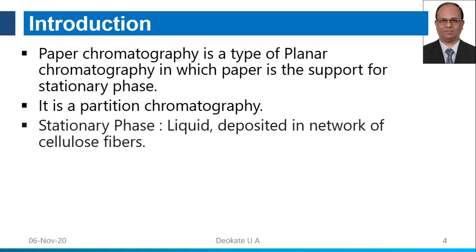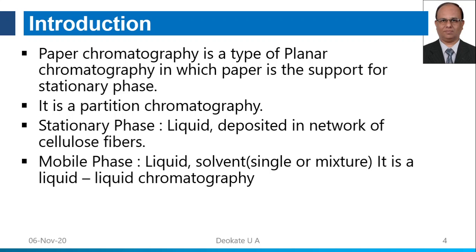Paper chromatography is a partition chromatography. Although the paper is a solid, the stationary phase used is a liquid deposited in the network of cellulose fibers. The paper only acts as a support to hold this liquid. The liquid solvent used as the mobile phase separates components by partitioning between two immiscible liquids — so it is also called liquid-liquid chromatography.